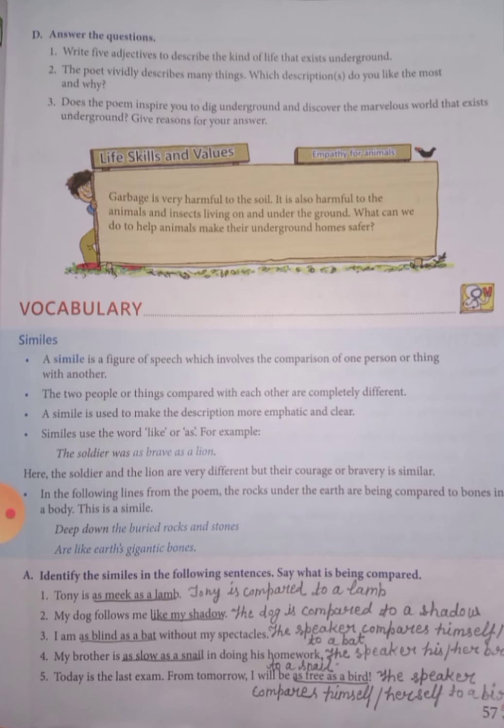For example: 'The soldier was as brave as a lion.' Here 'as' is used. The soldier and the lion are very different, but their courage and bravery is similar. In the poem, the rocks under the earth are compared to bones in a body — this is a simile. 'Deep down, the buried rocks and stones are like gigantic bones.'